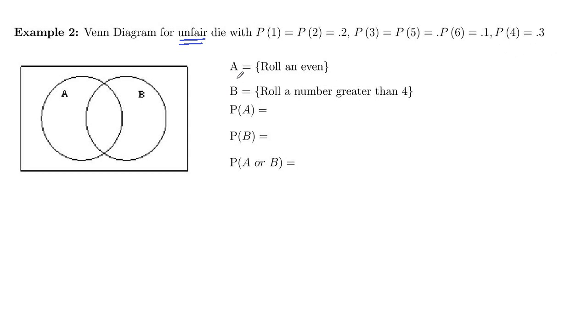A is going to be the event that we roll an even, B is the event that we roll a number greater than four. So I want to ask, what's the probability of A? Well, our sample points in the event A, even, are two, four, six. And then the sample points in B, the numbers greater than four are five, six.